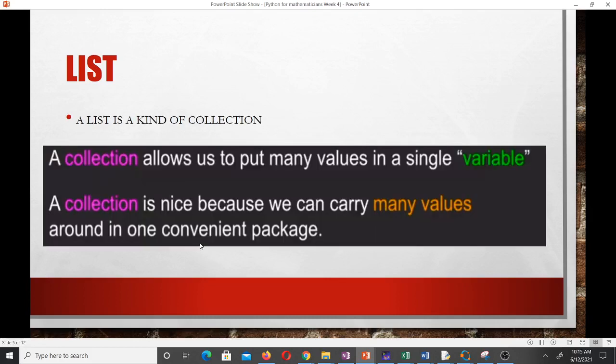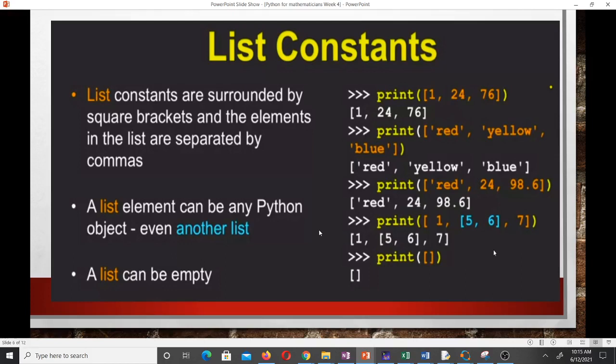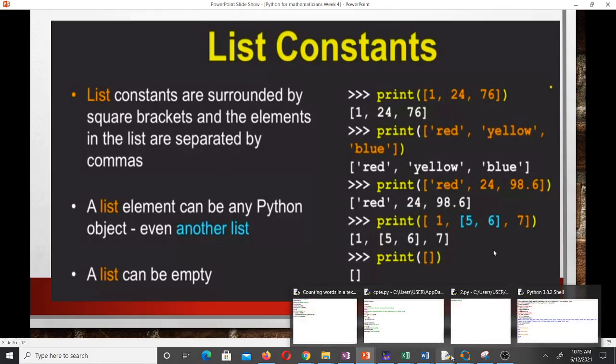Values inside a list are called items and lists use the square brackets. A list is a kind of collection. A collection allows us to put many values in a single variable. A collection is nice because we can carry many values around in one convenient package.